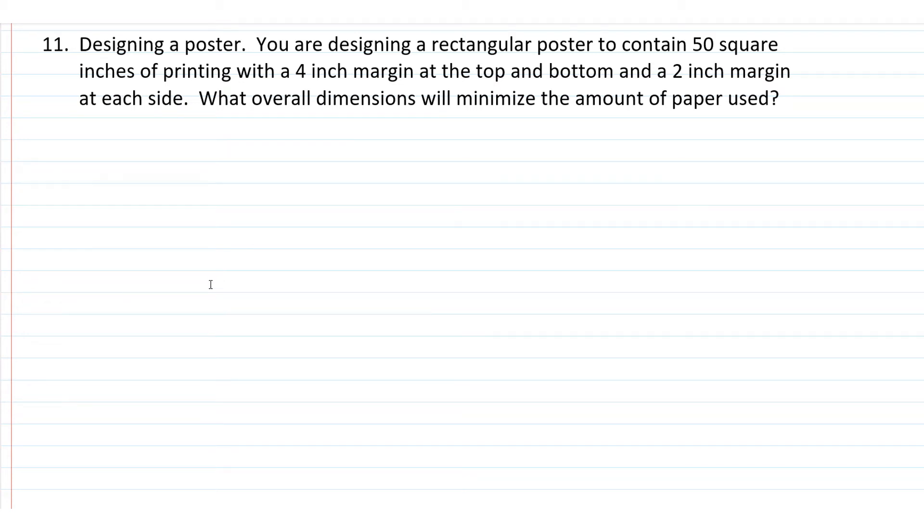Hi, I'm Ms. Hearn. Let's get started. In this application of optimization, we're looking at designing a poster. You're designing a rectangular poster that's going to contain 50 square inches of printing, and it must have a 4-inch margin at the top and bottom and a 2-inch margin at each side. We're asked to find the overall dimensions that will minimize the amount of paper that's going to be used.